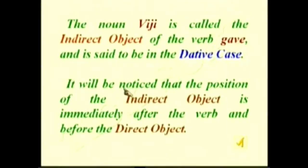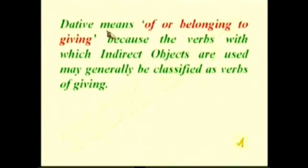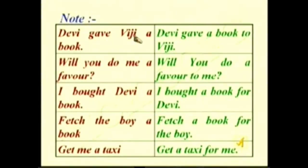The indirect object is placed immediately after the verb: 'Ramu gave Viji a book,' 'Sita gave Gopu a book.' The term dative means 'of or belonging to giving,' because verbs with indirect objects are generally verbs of giving. Compare: 'Devi gave Viji a book' / 'Devi gave a book to Viji'; 'Will you do me a favour?' / 'Will you do a favour to me?'; 'I bought Devi a book' / 'I bought a book for Devi'; 'Fetch the boy a book' / 'Fetch a book for the boy'; 'Get me a taxi' / 'Get a taxi for me.'